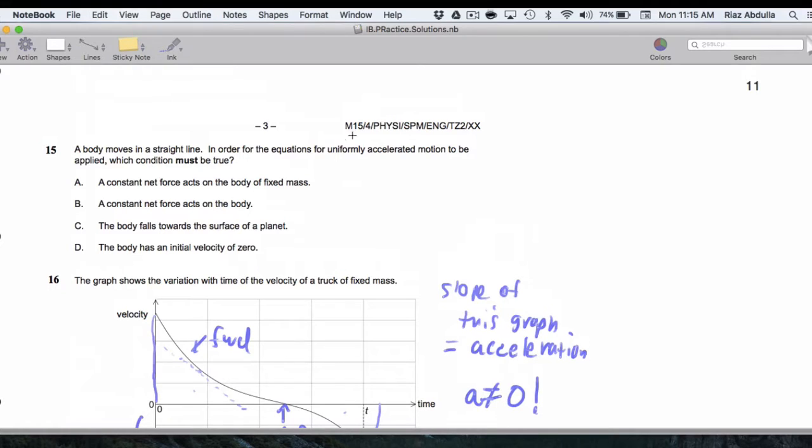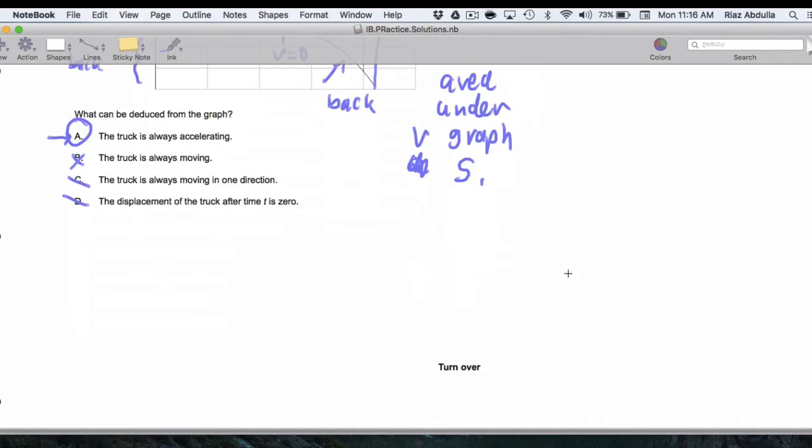Now, a body moves in a straight line, uniformly accelerated motion. This means unbalanced forces. What needs to be true? Well, we can be moving and still have unbalanced forces. Falling towards the surface of a planet, if you start off in outer space and fall, at first you have very little gravity then it gets stronger and stronger, so that doesn't apply. A constant net force acts on the body, that's true, but we can get more specific because if the mass changes, like in a rocket, you won't get uniformly accelerated motion. So choice A is the only choice. You need the mass to stay the same too, you can't be leaking stuff.